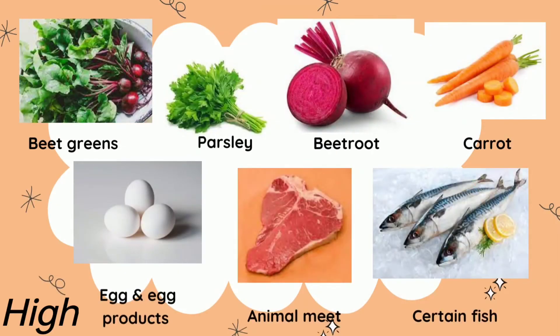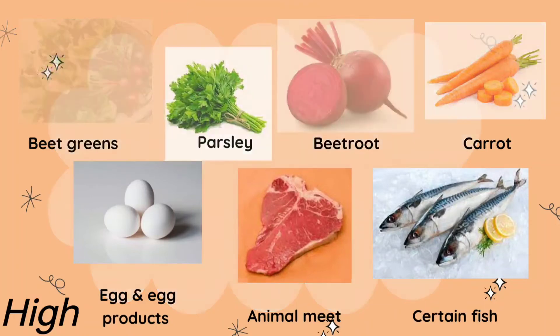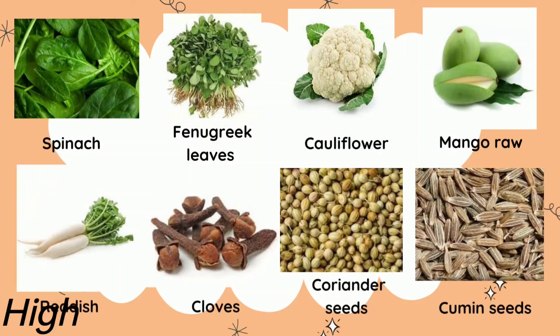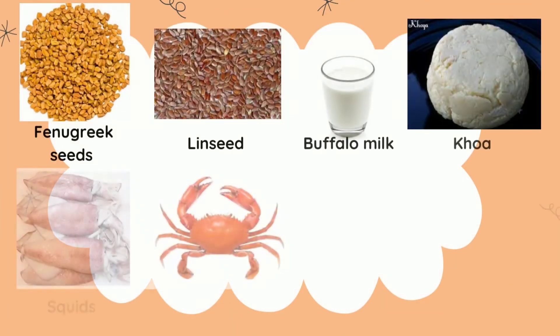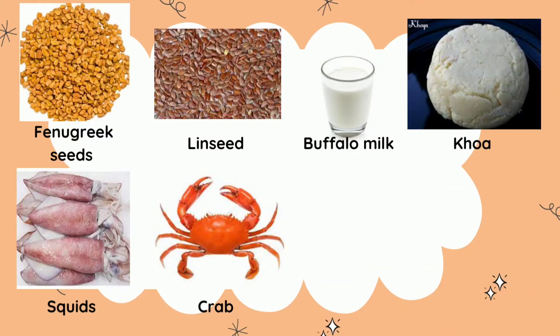Moving on to food sources: first, foods that are high — above 30 mg per 100 grams — include beet greens, parsley, beetroot, carrot, egg and egg products, animal meat, and certain types of fish. Then there is spinach, fenugreek leaf, and cauliflower.